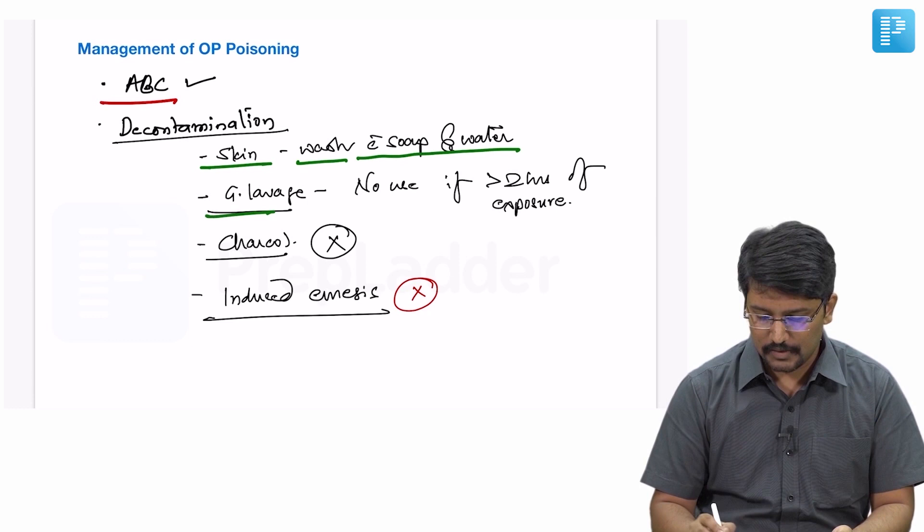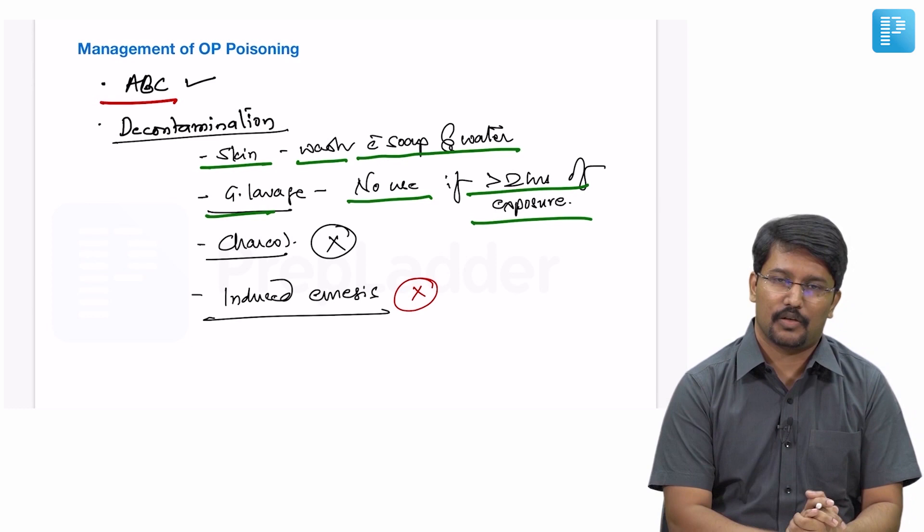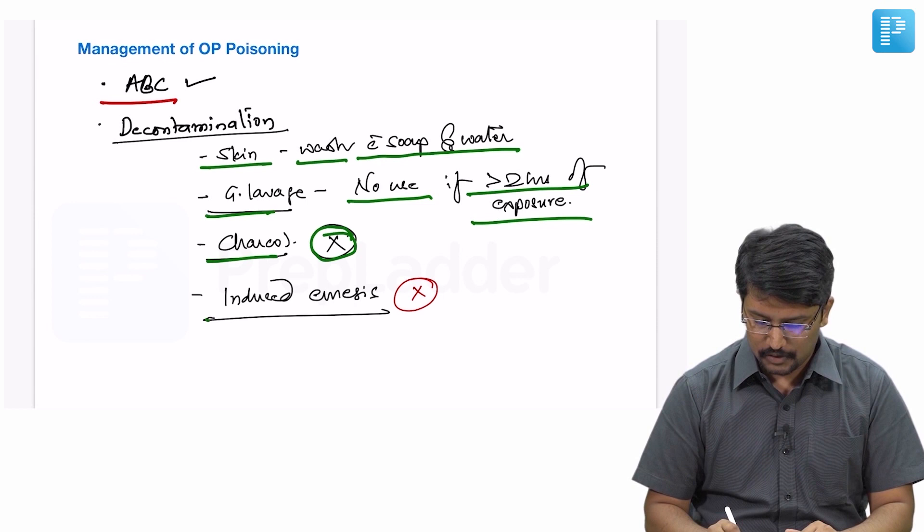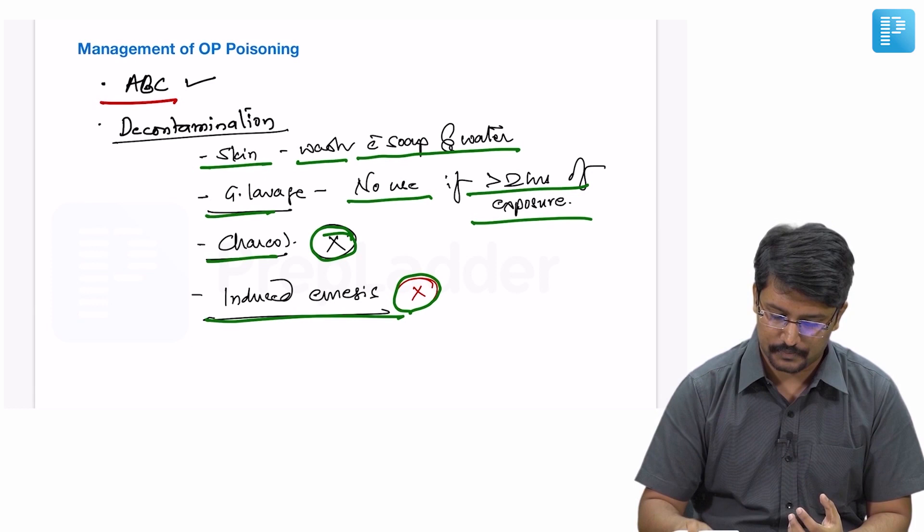What is the role of gastric lavage? It can be of some help if particularly offered within two hours of presentation or consumption. Beyond two hours, gastric lavage is not useful. What is the role of charcoal? No proven benefit, should not be tried. What is the role of induced emesis? Obviously a very crude method of getting rid of gastric content and should not be encouraged.